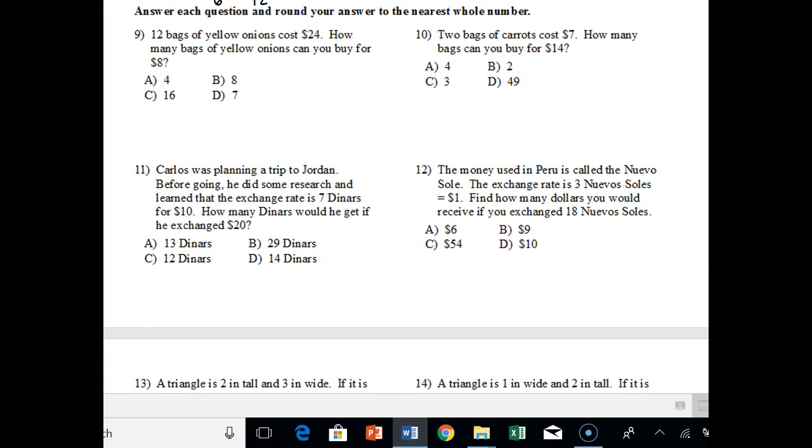All right. Now, the remaining problem is basically what you're going to want to make sure you do is answer each question. You can round your answers to the nearest whole number. That's important. And remember to write down what you're comparing. So let's start with number 9. It says 12 bags of yellow onions cost $24. How many bags of yellow onions can you buy for $8? So what we're comparing, we're comparing the amount of bags of onions we can buy and the amount of money. So our first ratio is in the first sentence, 12 to 24, 12 bags to $24, right? Equals, our second ratio will be in the second sentence here. It says how many bags of yellow onions can you buy for $8? So notice $8, dollars is on bottom. So $8 should go on bottom. And our variable right here is x.